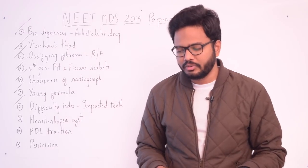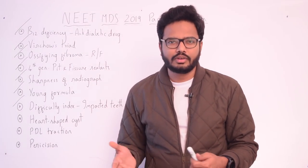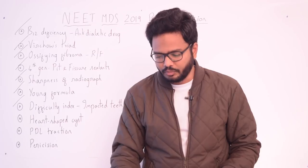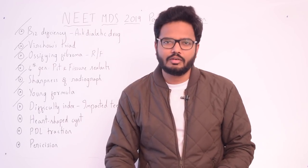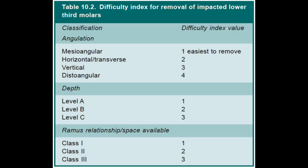Moving on to the difficulty index of impacted teeth — specifically the difficulty score for a mesioangular class 2 position C mandibular third molar. Based on angulation: mesioangular impaction is easiest to remove with a difficulty index score of 1, horizontal or transverse scores 2, vertical scores 3, and distangular scores 4. Based on depth: levels A, B, and C score 1, 2, and 3 respectively. Based on space available or ramus relation: class 1, 2, and 3 score 1, 2, and 3 respectively.